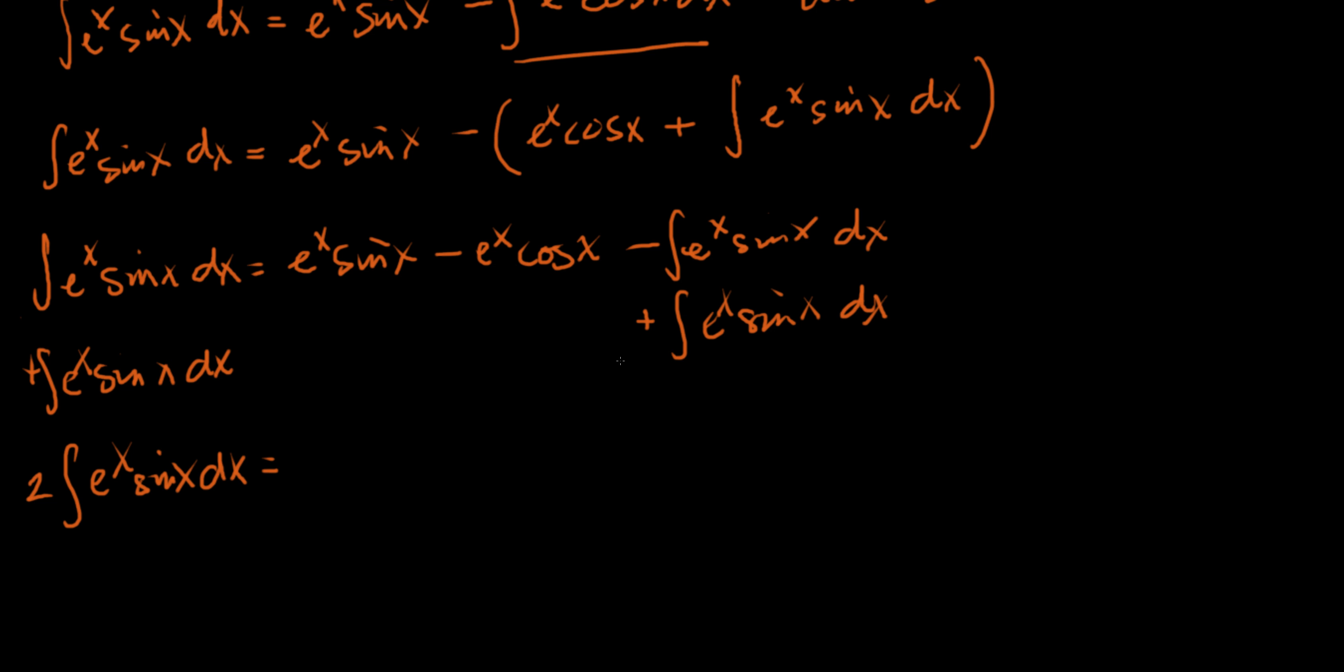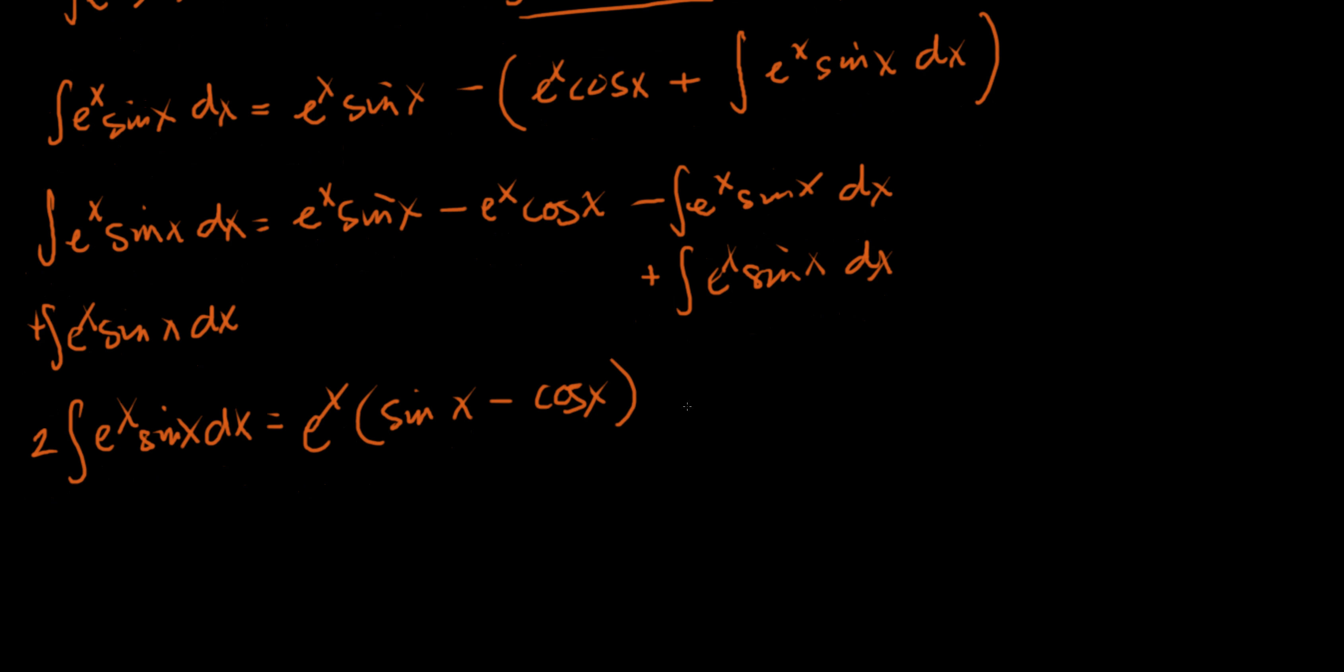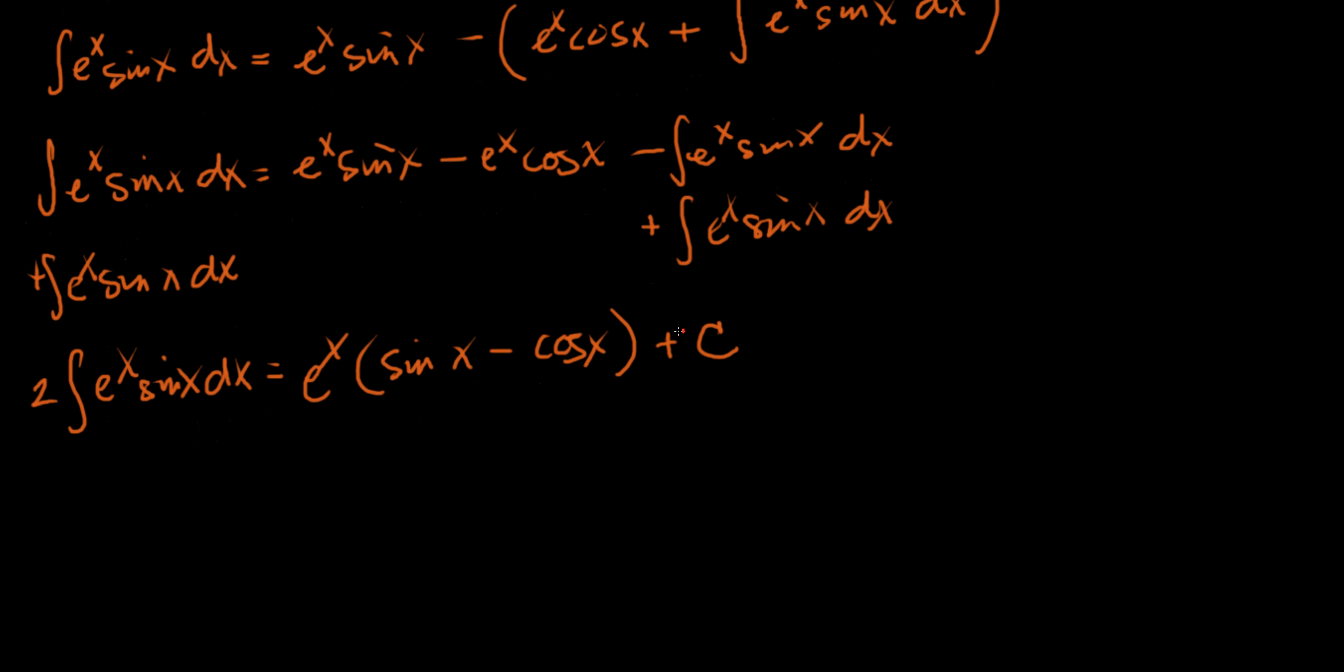And we'll see that on the left side we're adding like terms. We had one of them, we added another one, therefore we have two of these integrals: two e to the x sine of x dx. And now this is where this term wrap around sort of comes in, as your function sort of wraps around or loops back to where you originally started. Here I have e to the x in both terms, I'm just going to factor that out: e to the x times sine of x minus cosine of x.